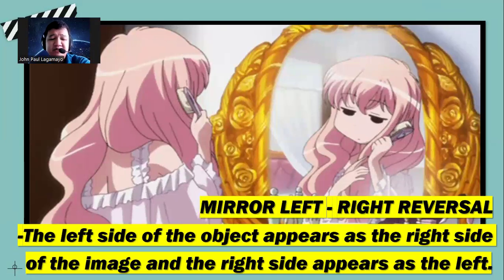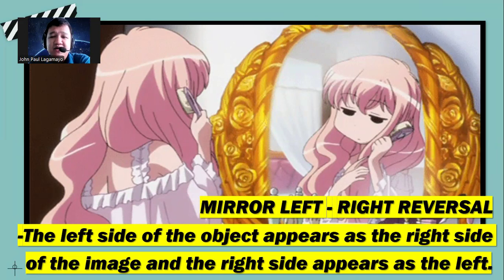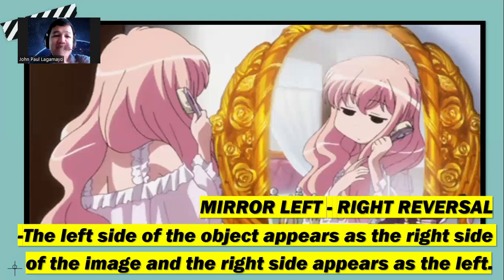Going back to the topic of the mirror left-right reversal. When we speak about this one, the left side of the object, in this illustration, will be the right side of the image or what you see in the mirror, and then the right side appears as the left. That is also similar when you are facing your classmate—your right side is your classmate's left side, and your left side is your classmate's right side. And that is how we explain the mirror left-right reversal. You can also see this when you take selfies—your right side becomes the left side and it reverses when you don't have the mirror setting on your camera.